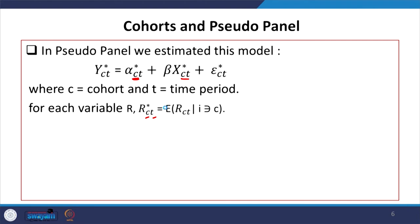For the construction of cohorts, the first step is to select variables whose values do not change much over time. Each individual in the sample must be placed in exactly one cohort. It must follow the assumption that the cohort terms alpha_CT are fixed over time. Alpha_CT is fixed when the true cohorts contain the same individuals at each time period.